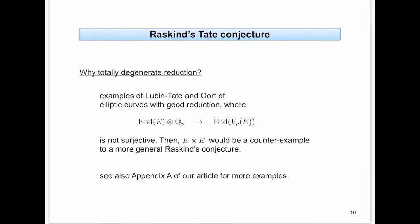Why totally degenerate reduction? There are examples of Lubin-Tate and Oort, starting with elliptic curves with good reduction, where a related Tate conjecture map — from endomorphisms tensored with Q_p to endomorphisms of the p-adic Tate module — is not surjective. If you look at this more closely, you can construct a counterexample for E times E, giving a counterexample to a more general Raskind conjecture that states surjectivity for L=P but without insisting on totally degenerate reduction.